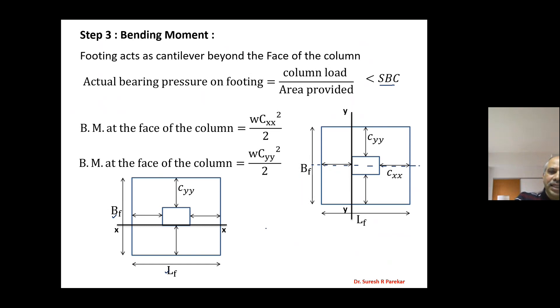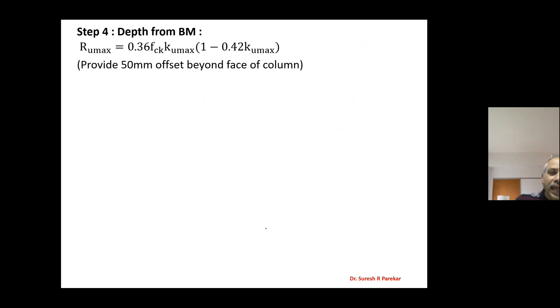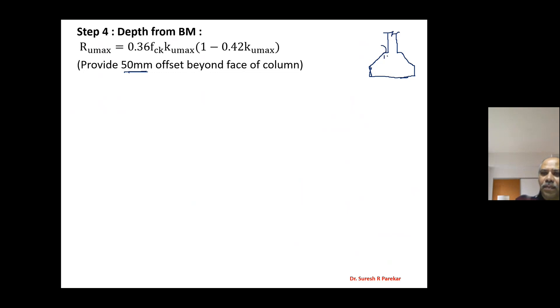Knowing these bending moments along XX and YY, we can calculate depth from bending moment as usual. An important point: we provide an offset of 50 mm from the face of the column. This offset is provided because without it, formwork becomes very difficult. So a 50 mm offset from the face of the column is standard in footing design, and from this we calculate the value of depth using the Ru max formula.